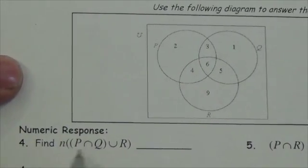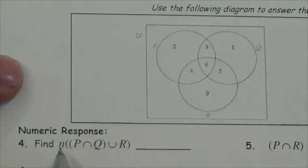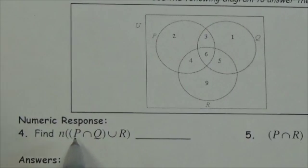So this question right here asks us to find, based on this Venn diagram, the number of elements in P intersection Q union R.